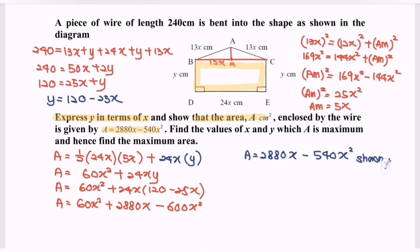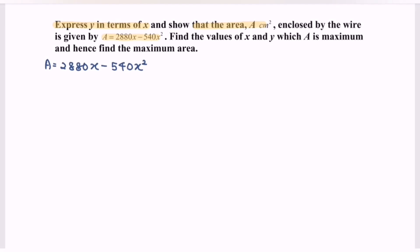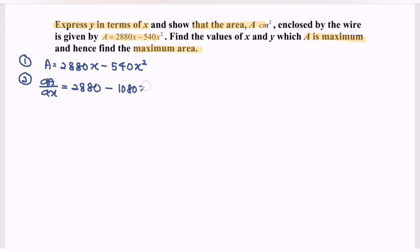We have shown the expression for area. For the second part, we find the value of x and y for which A is maximum, and hence find the maximum area. We find the first derivative: dA/dx equals 2880 minus 1080x. The second derivative equals negative 1080.